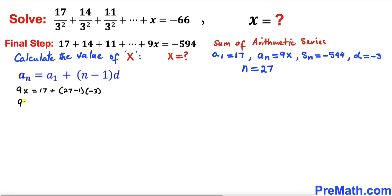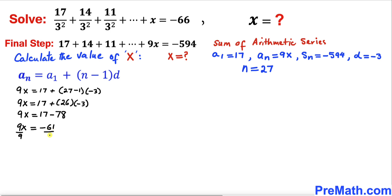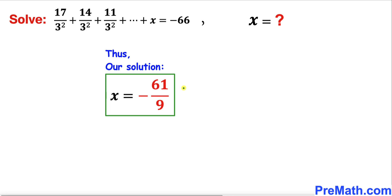Simplifying: 9x equals 17 plus 26 times negative 3. So 9x equals 17 minus 78, which gives 9x equals negative 61. Dividing both sides by 9 to isolate x, we get x equals negative 61 divided by 9. So our final solution is x equals negative 61 over 9. Thanks for watching, and please don't forget to subscribe to my channel for more exciting videos.